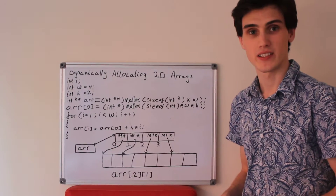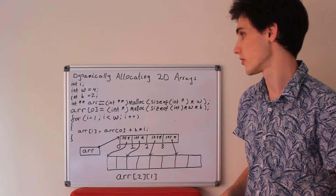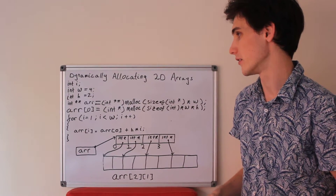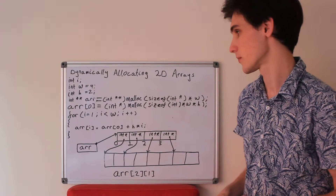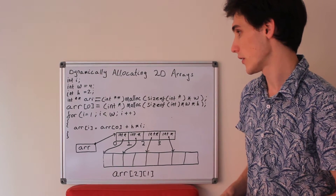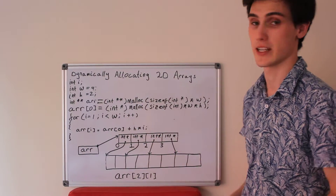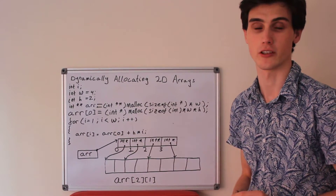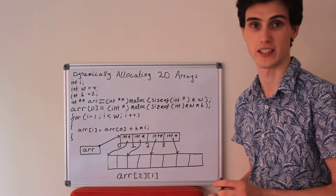We understand pointers in C and the difficulties you can have when allocating arrays. Now I'd like to talk about dynamically allocating two-dimensional arrays — that is, an array of arrays.